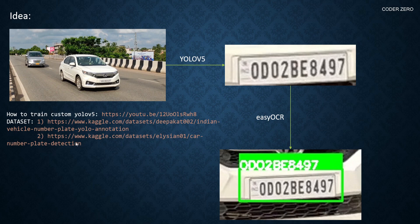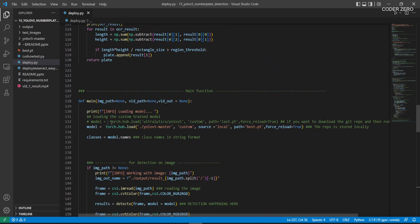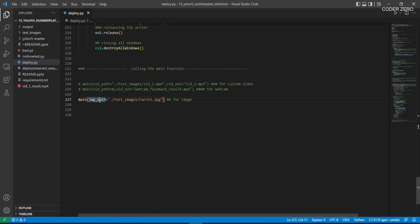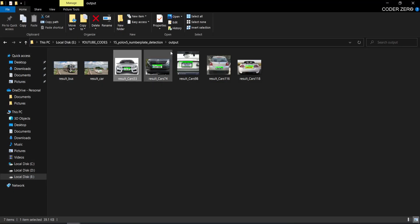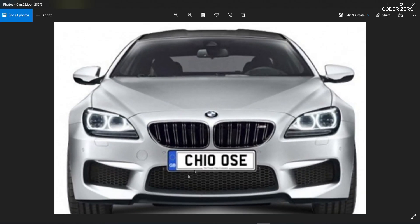I've taken training data from two links which I'll share — you can download data from there and train your own custom YOLOv5 model, or use your own number plate detection dataset. Here in the code, this is our main function. We call this function when running the Python script, passing an image path — in this case 'car53'. This is the input image we're giving to the model for number plate detection and recognition.